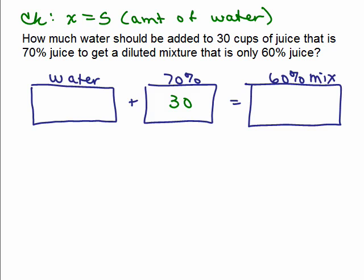All right, so we're going to check our answer now. We let X be the amount of water, so we know now that 5 goes in here for how much water we're going to use. So if we put in 5 cups of water and 30 cups of the 70% juice, we'll have 35 cups of juice. You're adding 5 cups and 30 cups.